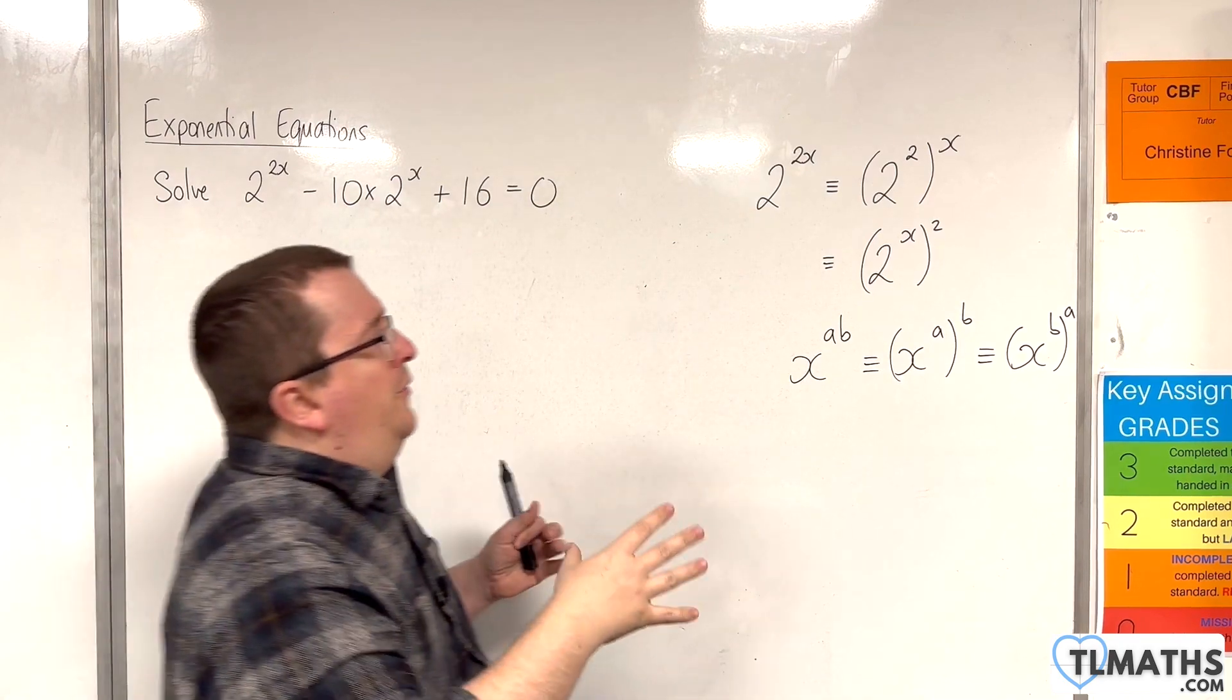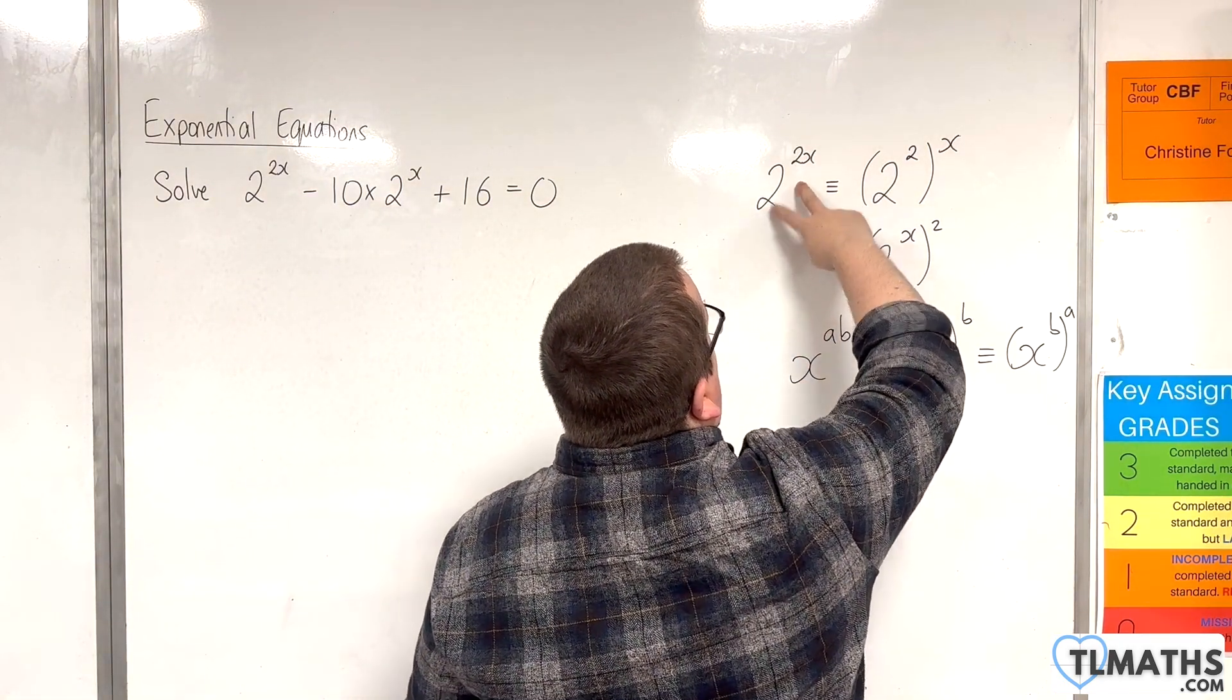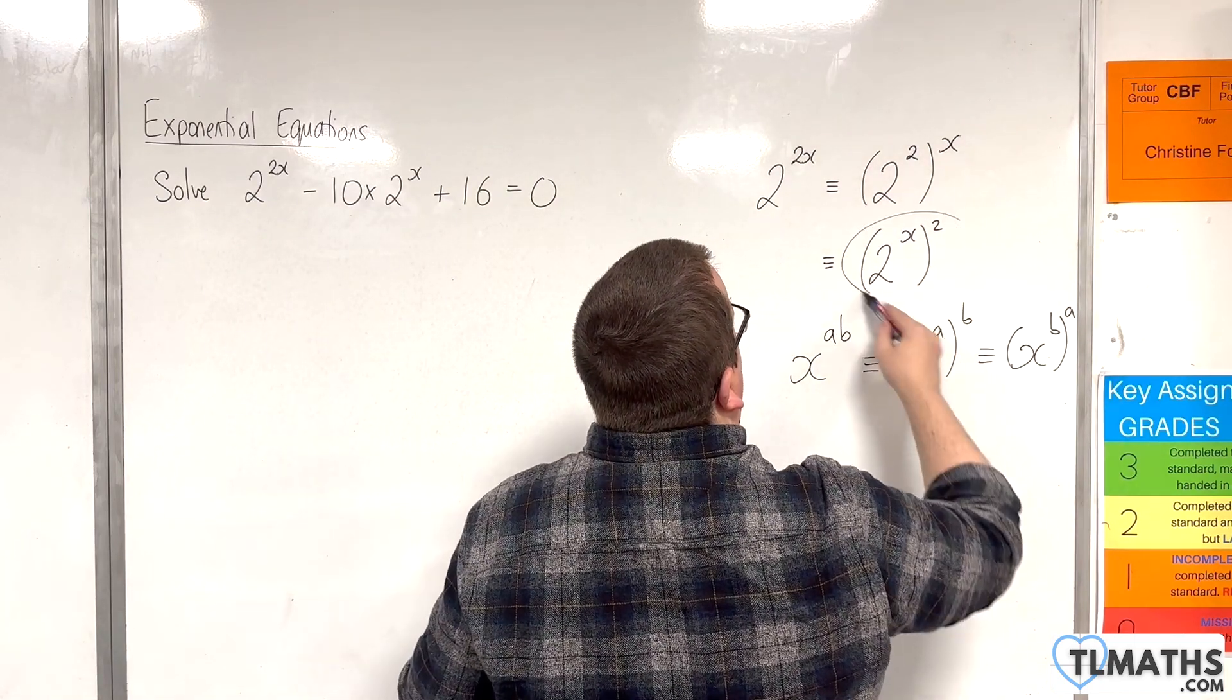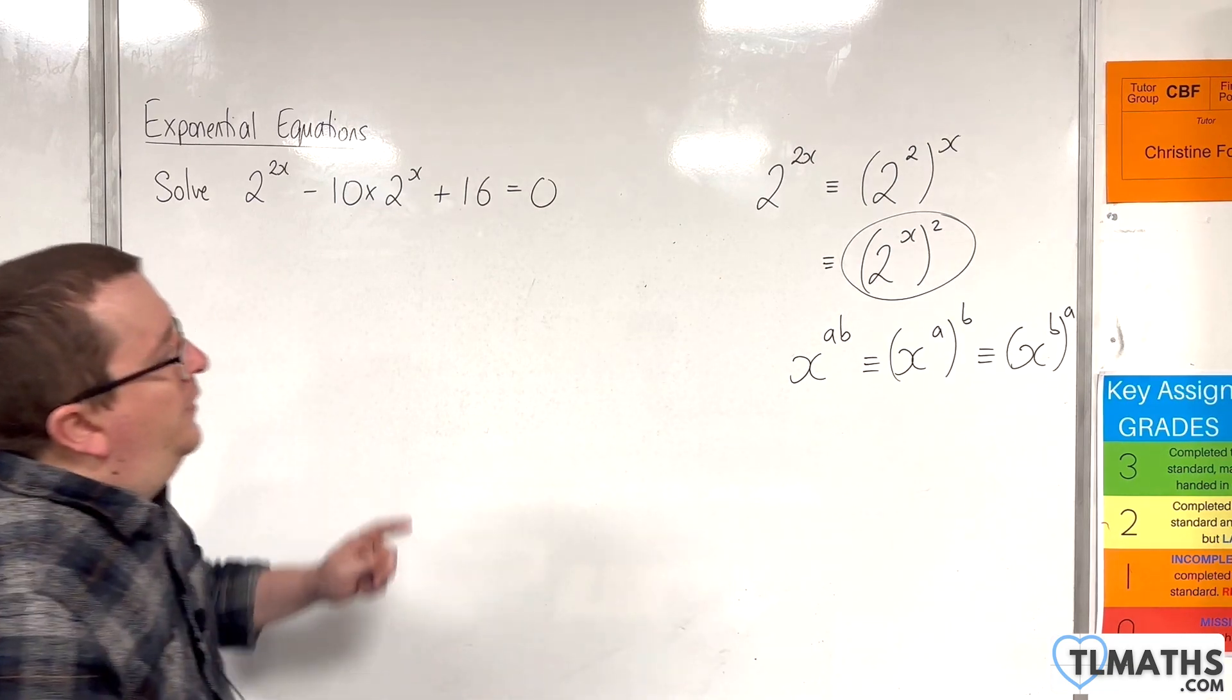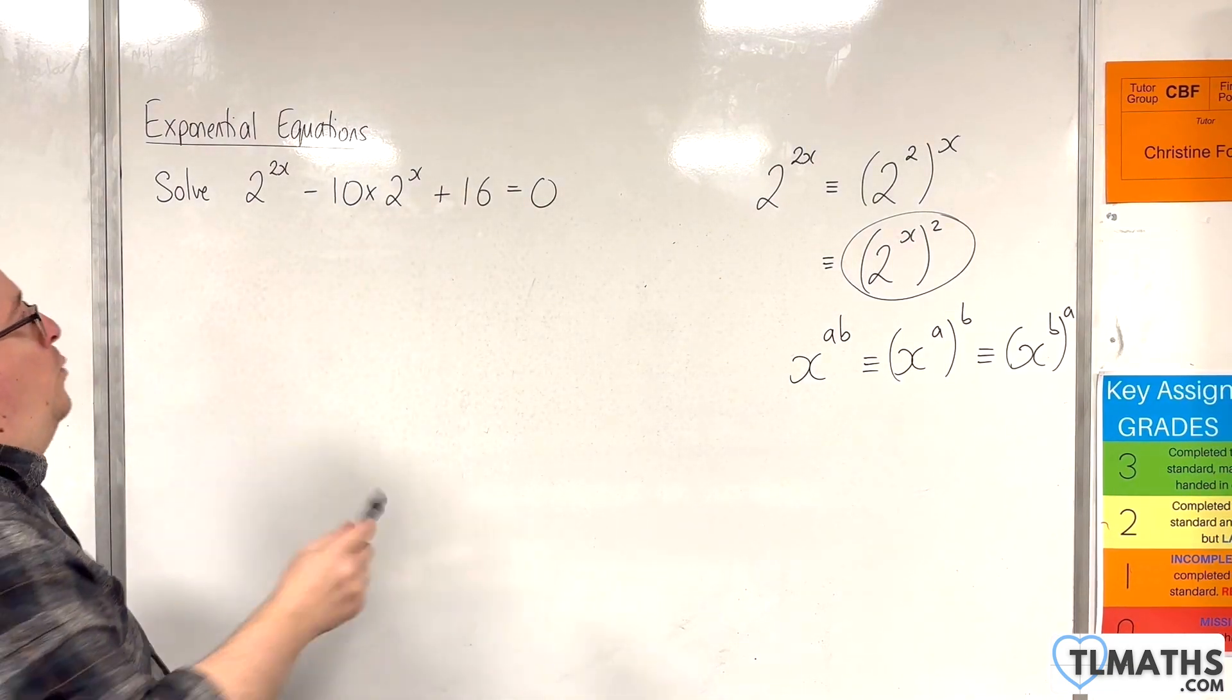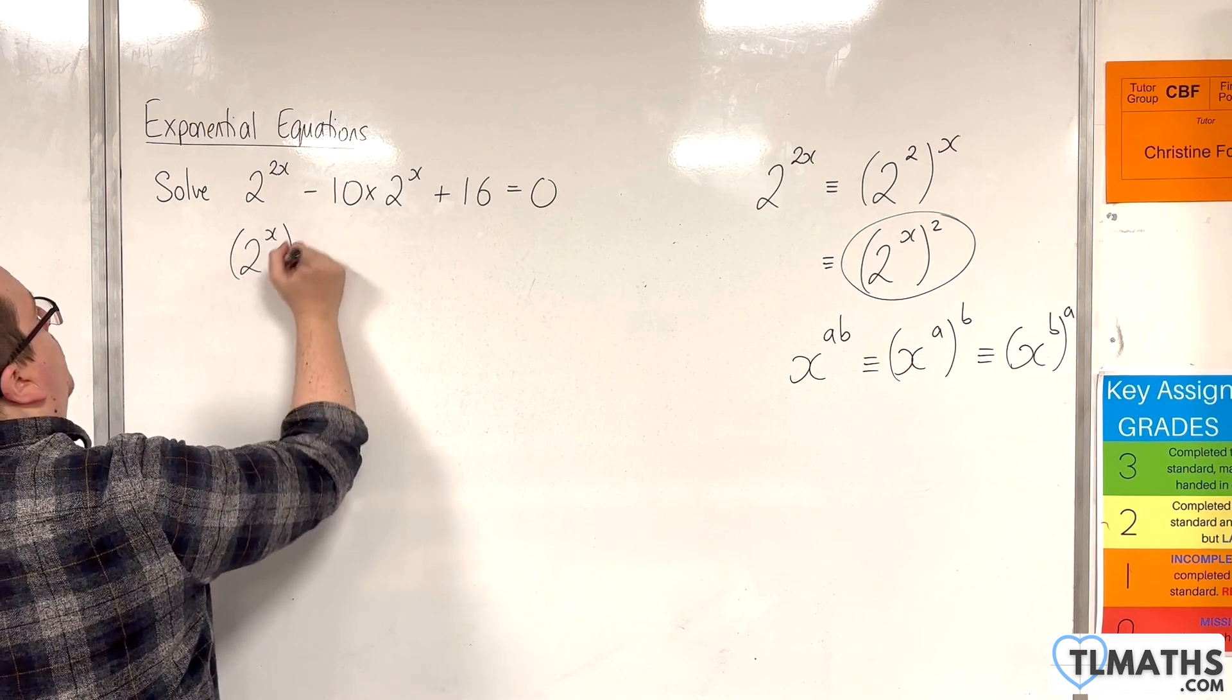Now, because of that, we want to spot that 2 to the 2x is this. This is the one that we want to focus our attention on, because the 2 to the x is already there. And what we've got here is 2 to the x squared.